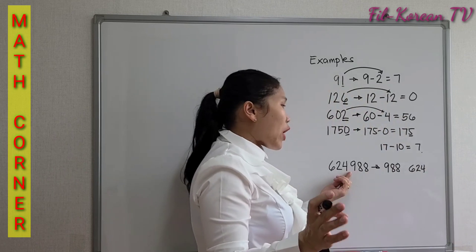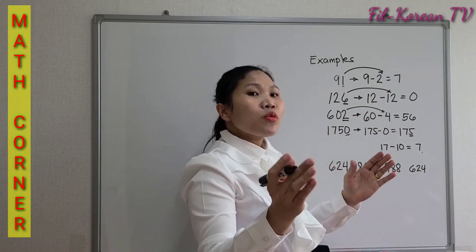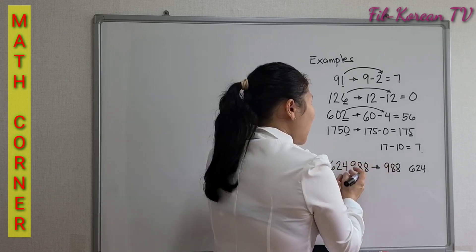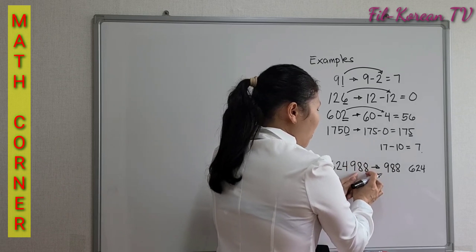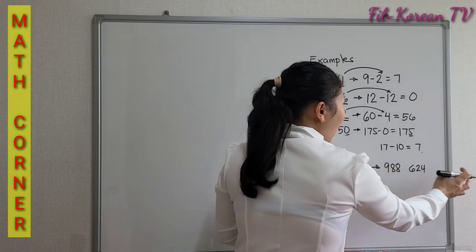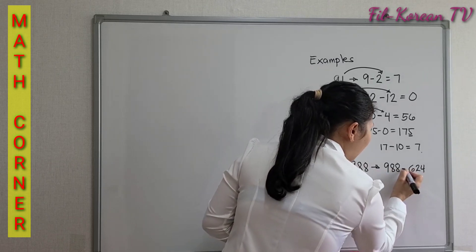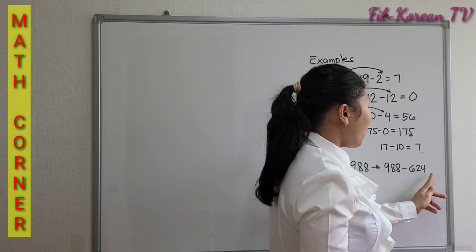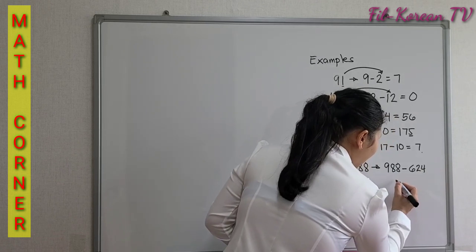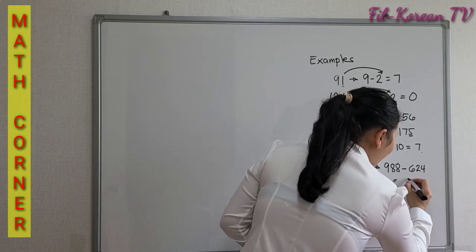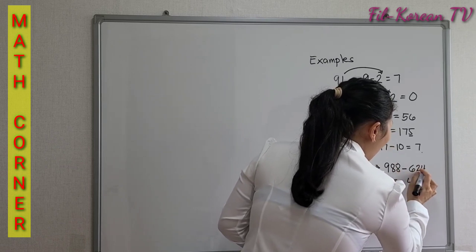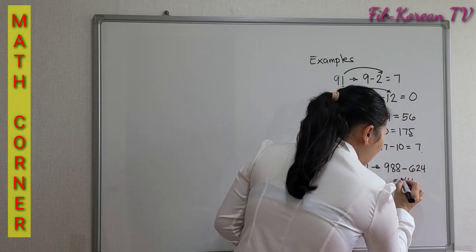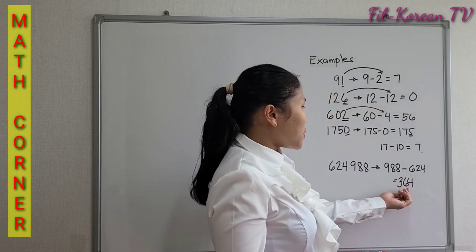After grouping, we alternately subtract and add the numbers in blocks. We subtract the second group from the first group. So 988 minus 624: 8 minus 4 is 4, 8 minus 2 is 6, 9 minus 6 is 3. The answer is 364.